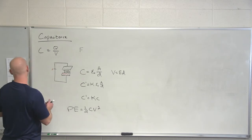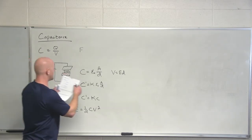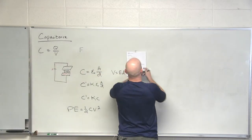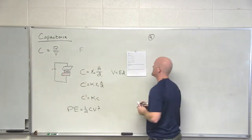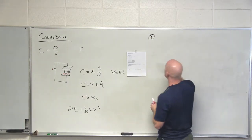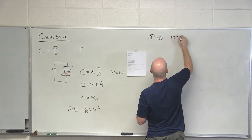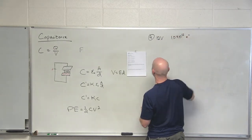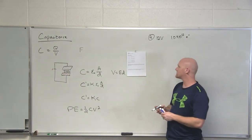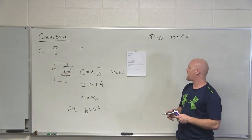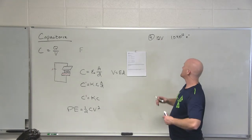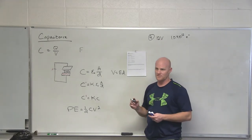So if we look at number four: when a parallel plate capacitor is fully charged in a circuit with a 12 volt battery, there are 1 times 10 to the 12th, i.e. a trillion, excess electrons on one of the two plates. What is the capacitance of the capacitor and how much potential energy is stored in the capacitor?